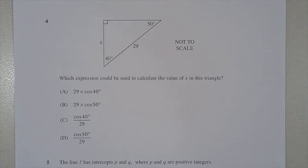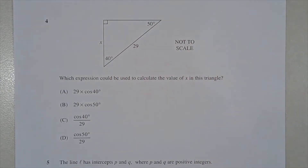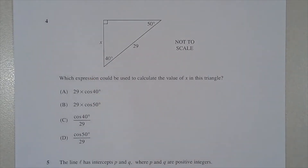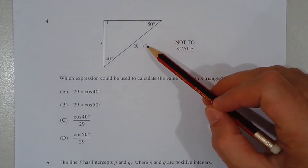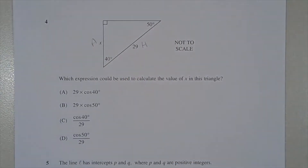Question 4: which expression could be used to calculate the value of x in this triangle? We have a right angle triangle, a known hypotenuse, and one unknown side x, plus two known angles. All options involve the cosine ratio, and cosine is adjacent over hypotenuse. So let's label the sides — the hypotenuse and the adjacent side.